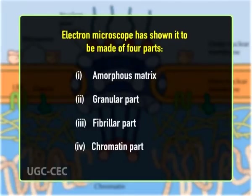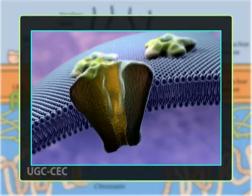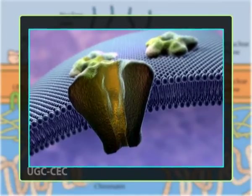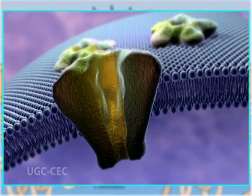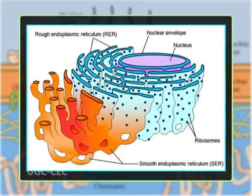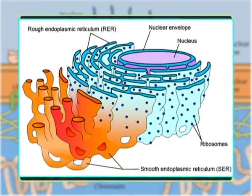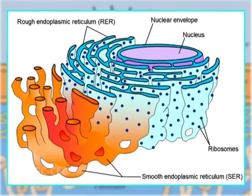Now let us discuss the nuclear envelope in detail. Like other cell membranes, the nuclear membranes are phospholipid bilayers which are permeable only to small nonpolar molecules; other molecules are unable to diffuse through the phospholipid bilayer. The nuclear envelope has a complex structure consisting of two nuclear membranes, an underlying nuclear lamina, and nuclear pore complexes. The outer nuclear membrane is continuous with the endoplasmic reticulum, so the space between the inner and outer nuclear membranes is directly connected with the lumen of the endoplasmic reticulum and has ribosomes on its cytoplasmic surface. In contrast, the inner nuclear membrane carries unique proteins that are specific to the nucleus.